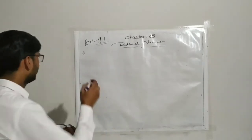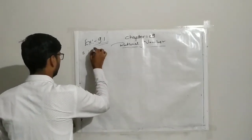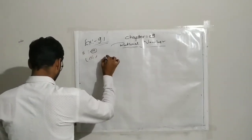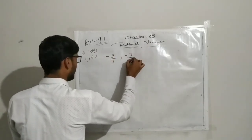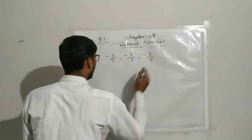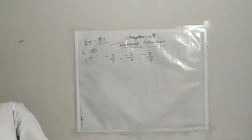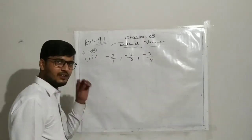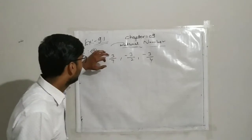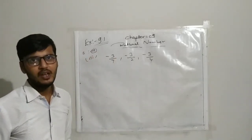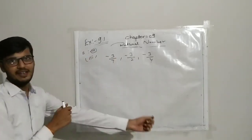In third question: minus 3 upon 7, minus 3 upon 2, and minus 3 upon 4. In these numbers, this is a very valid case. Here all numerators are the same. The numerator values are the same.